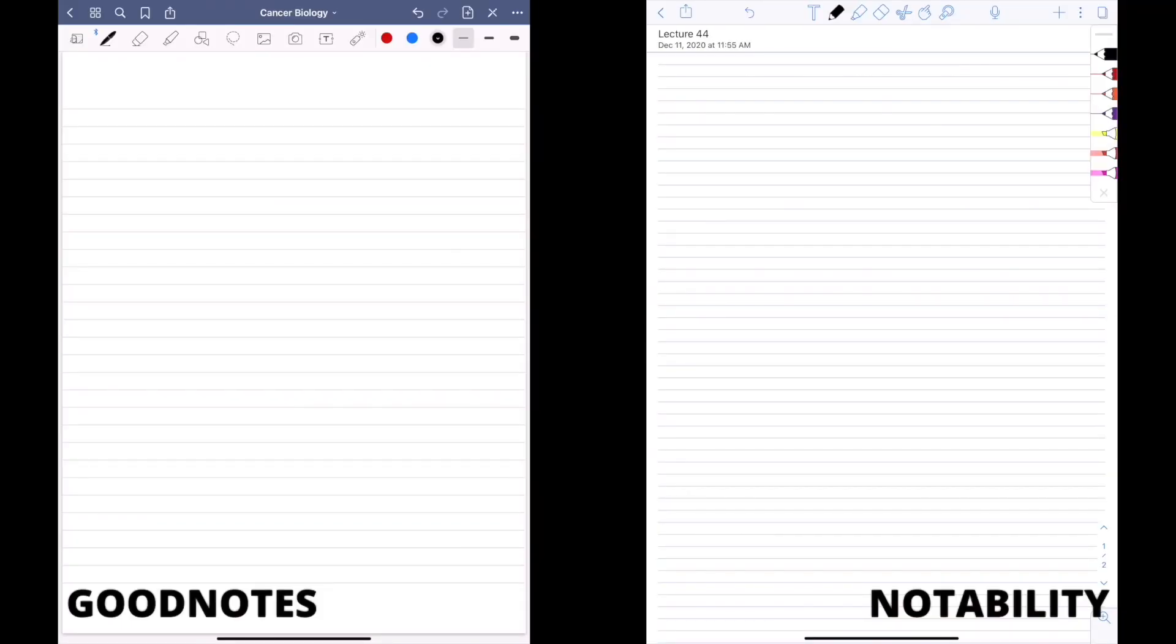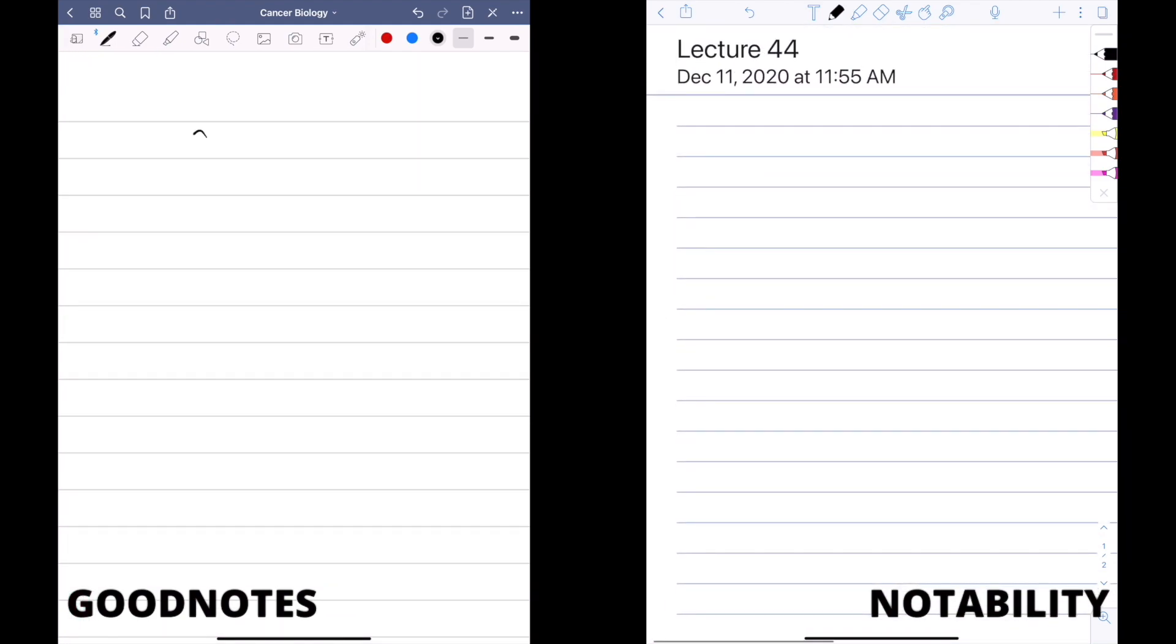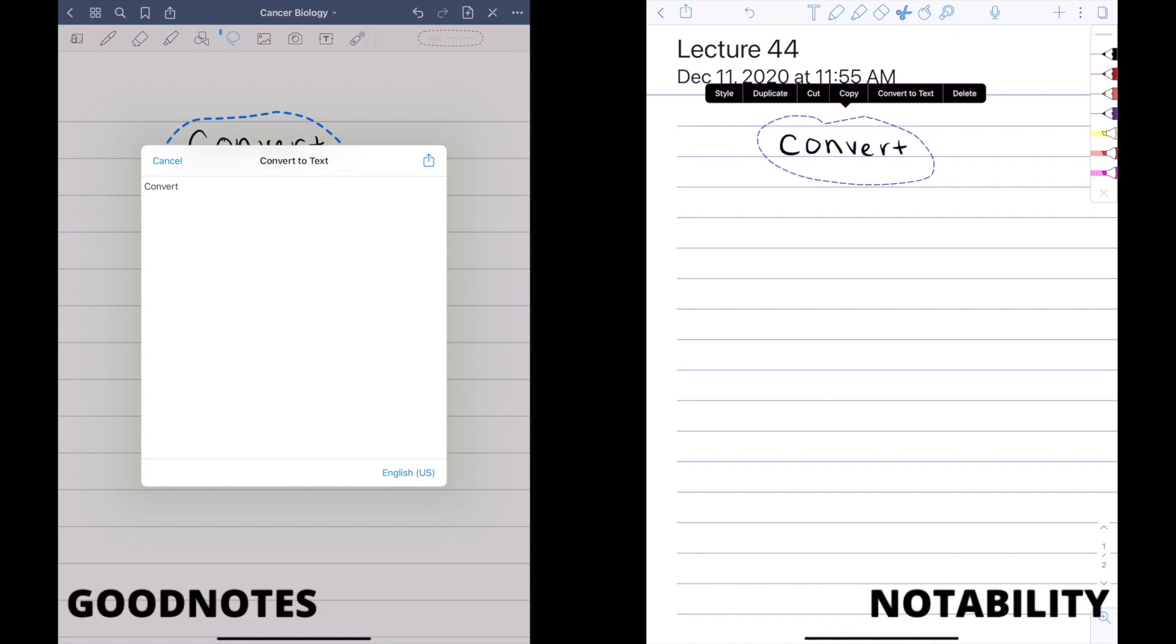Convert to text is offered in both apps. This is something that I don't really use, but I know that it can be helpful for other people. You basically just write whatever you want to write, select the text by using the lasso feature, and then click convert to text.